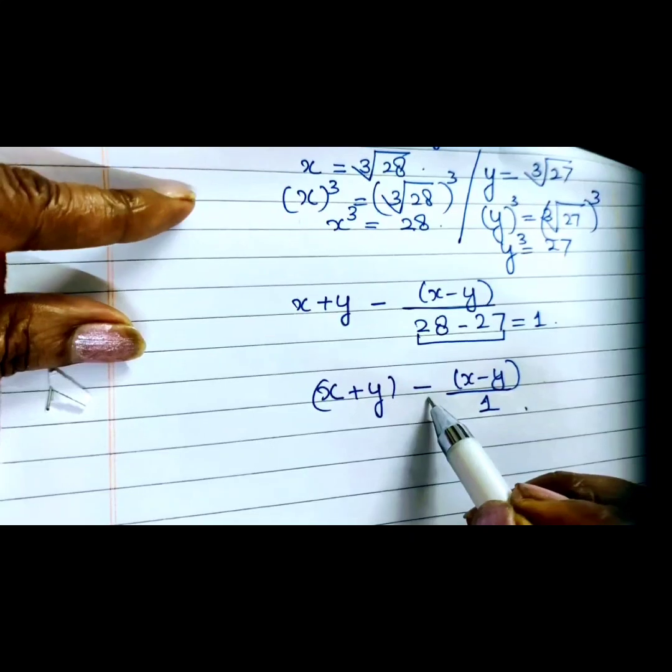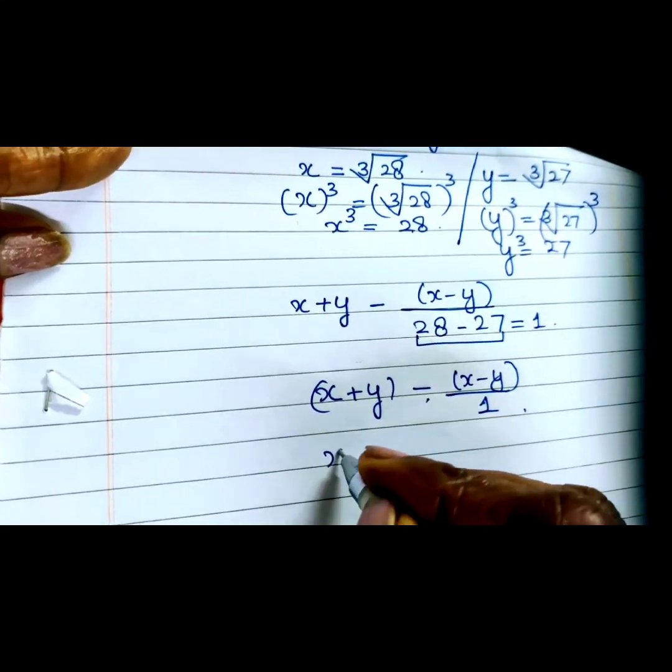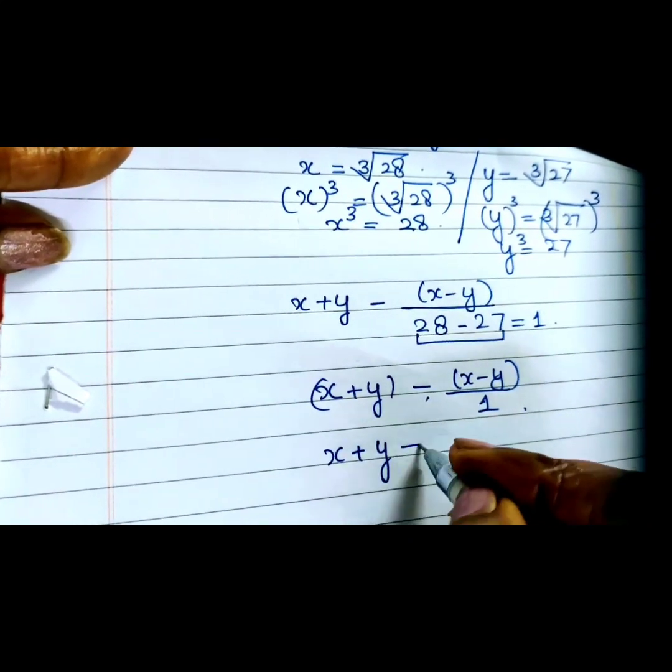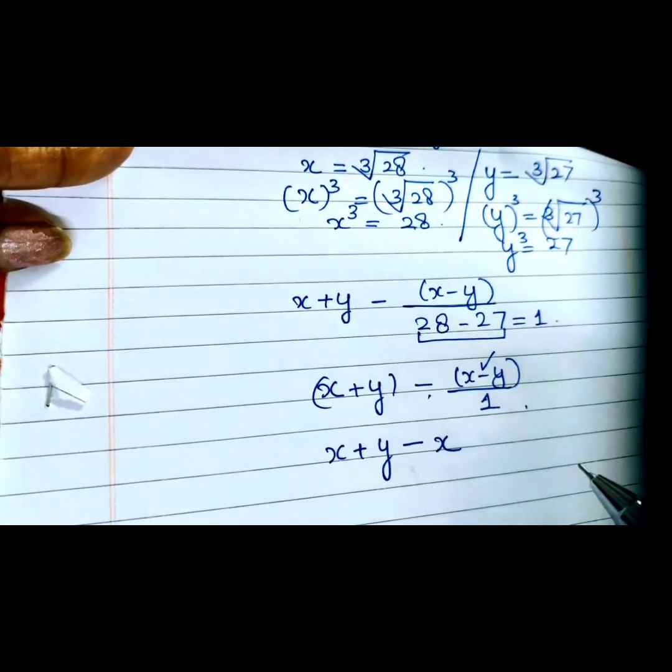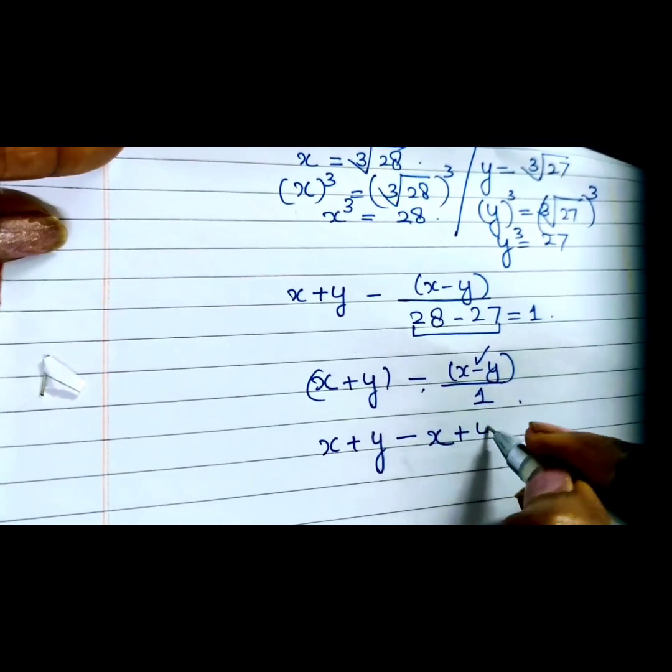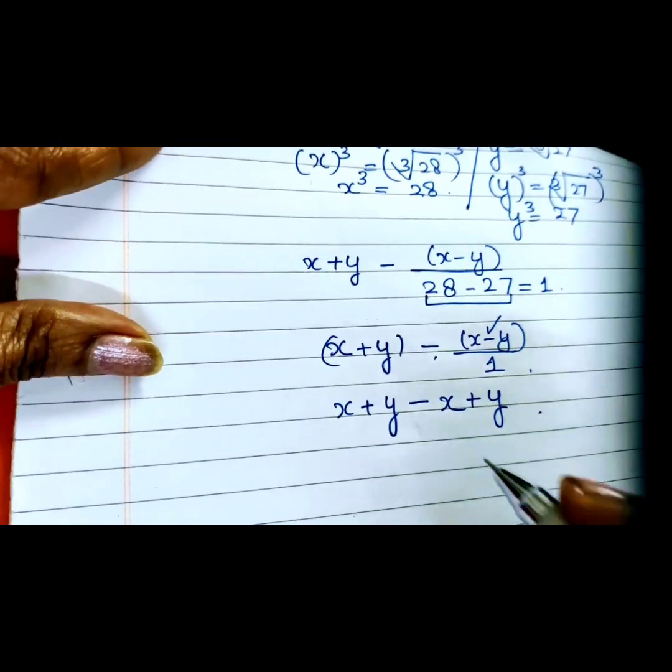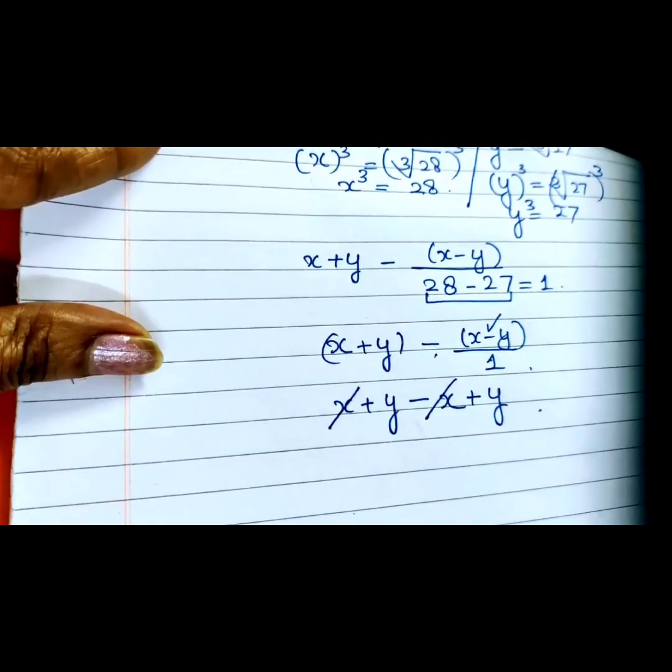Now because there is a minus sign outside the bracket, when we open this bracket we will change the sign. So this becomes x + y - x + y. The x terms cancel, and what